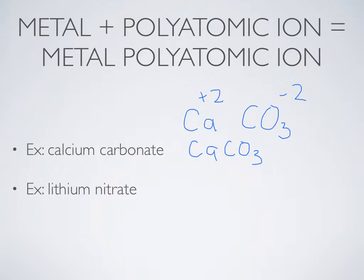Lithium nitrate is another example, so lithium is my metal, nitrate is my polyatomic ion. Lithium is Li plus 1, nitrate is NO3 minus 1. Again, they're balanced positive 1 negative 1, so I can just write LiNO3.